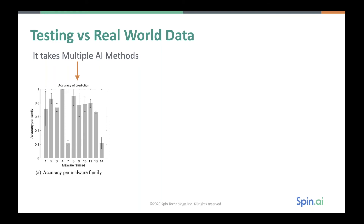This is an analysis done by data scientists and cybersecurity experts looking at different malware families and how a single-point artificial intelligence performs against them. For example, if you look at index number seven, this particular AI patterning failed to detect it. That's why you need a family of AI deployed — it has to work cooperatively, and you have to do threshold signaling based on inputs from more than one machine learning method.